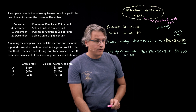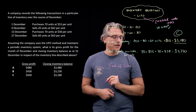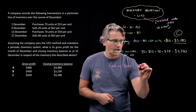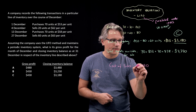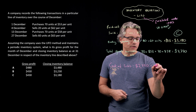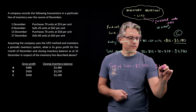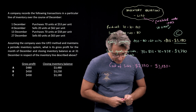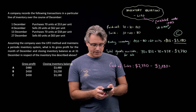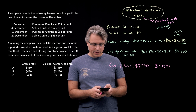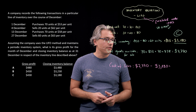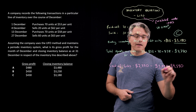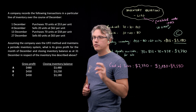What is the cost of sales? Cost of sales is the difference between total goods available for sale and ending inventory: $7,770 minus $3,180 equals $4,590. So $4,590 is the cost of goods sold.